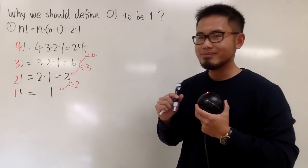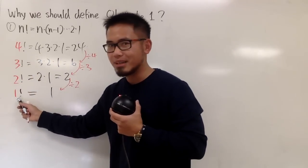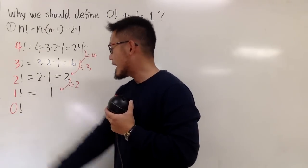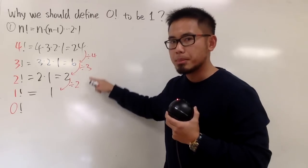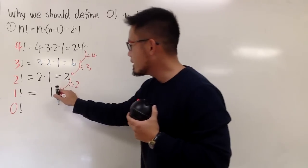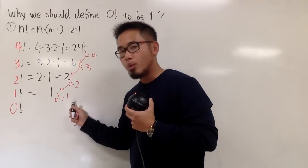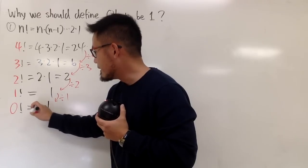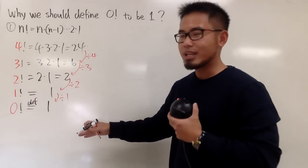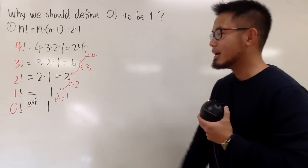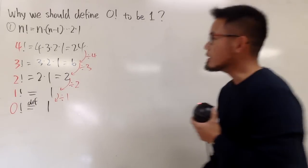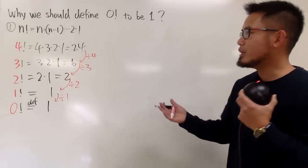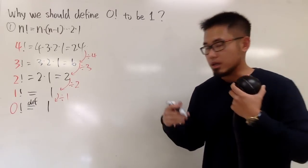Now, 4, 3, 2, 1 — the next number is 0. For 0 factorial, the divisors were 4, 3, 2, so the next must be divided by 1. That gives 1 divided by 1, which equals 1. So 0 factorial should be defined to be 1 so that we can have this nice pattern; otherwise, the pattern wouldn't follow.